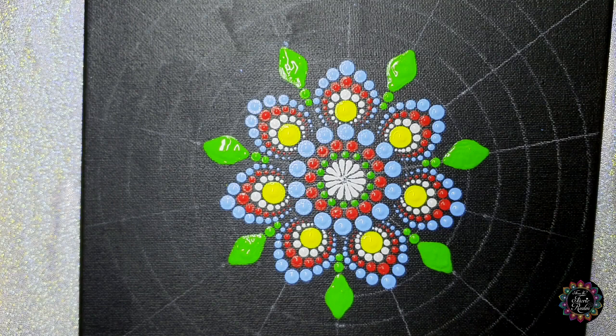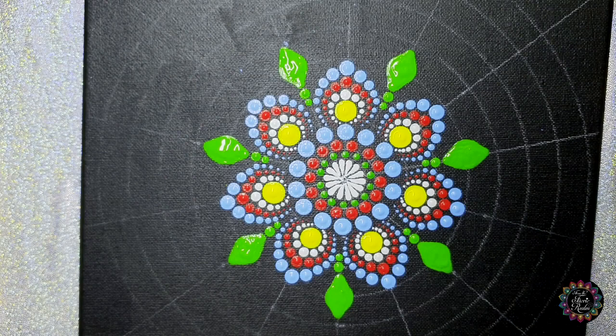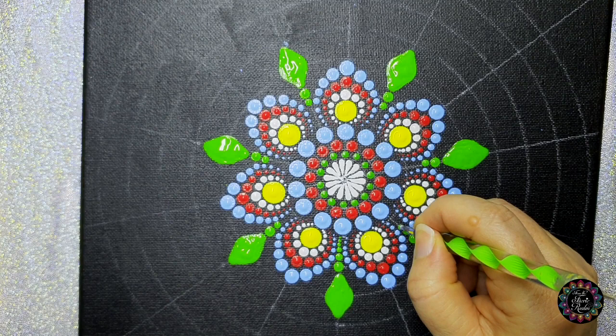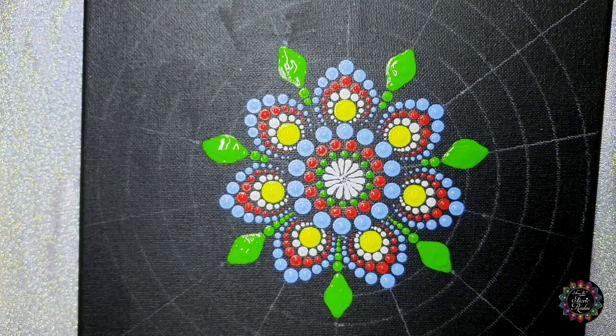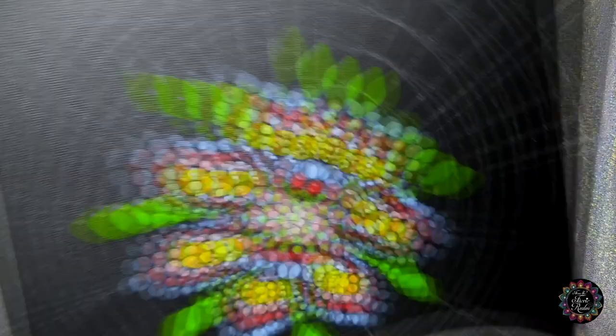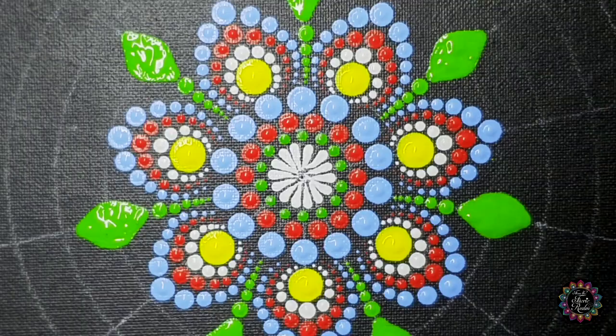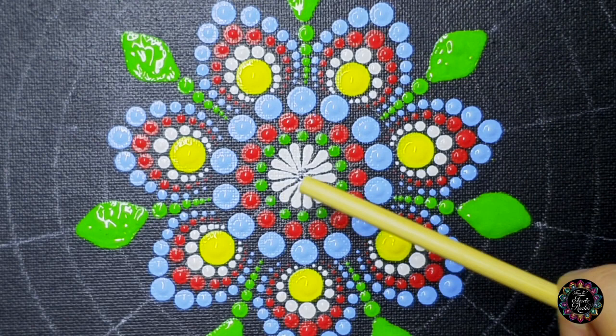Then we're going to take the big ball side of the green tool with the green paint and you're going to walk the dog two, three, four. I can do four. If you can do three, you'll do three. Just stick to that number. So it looks like my center is quite dry.